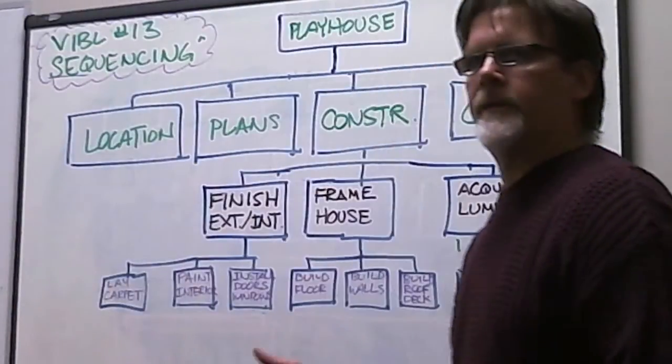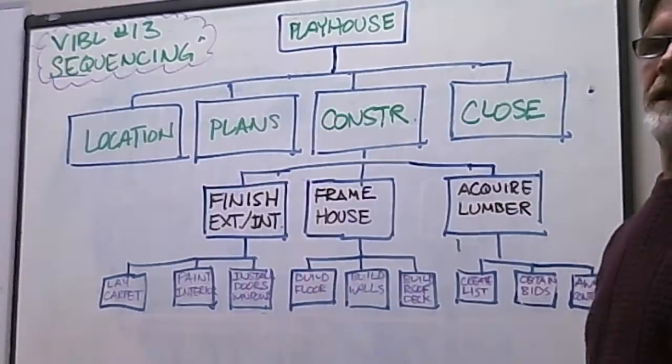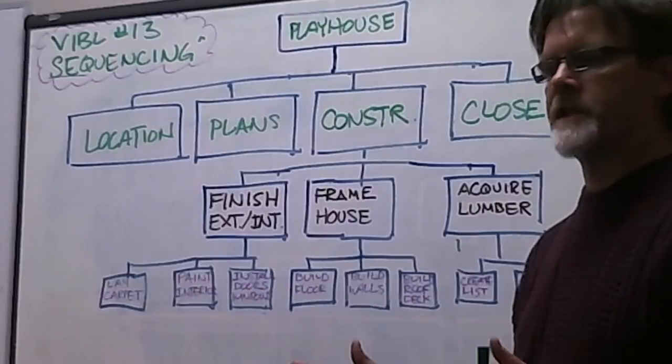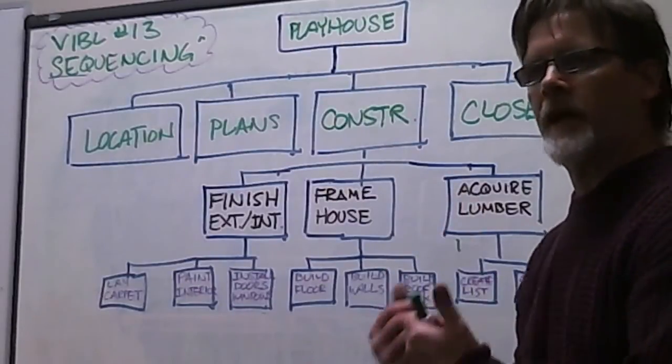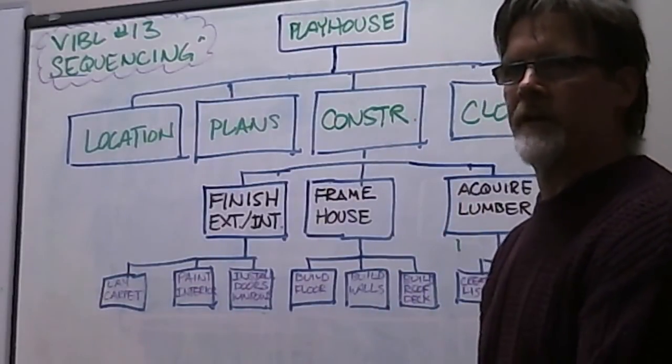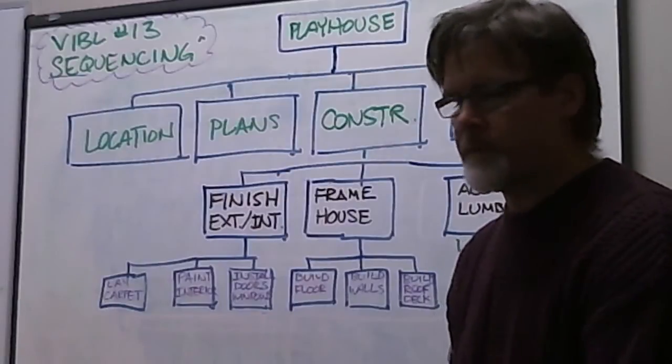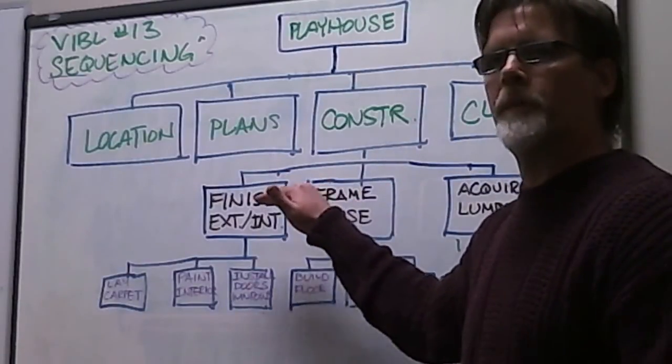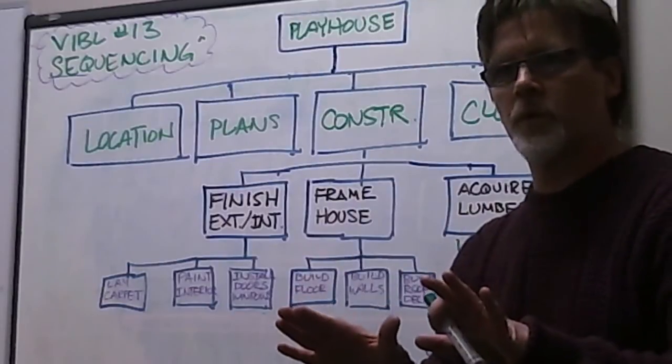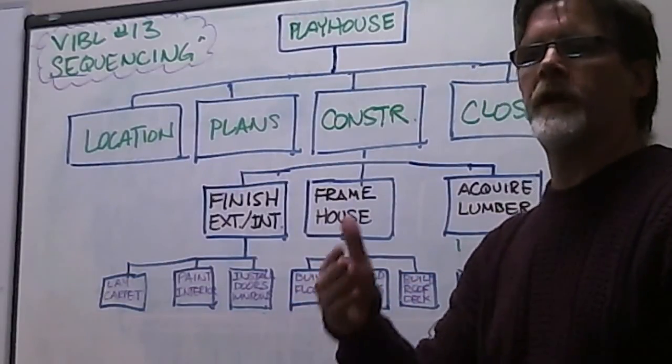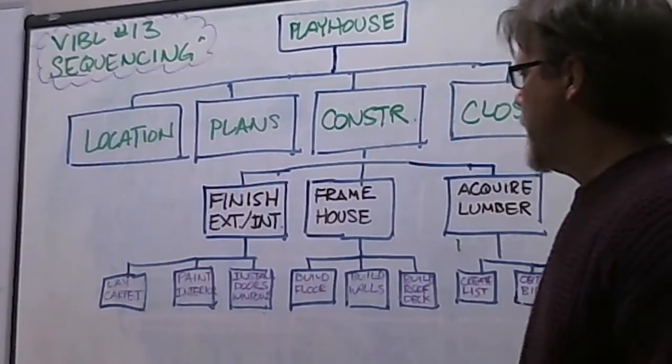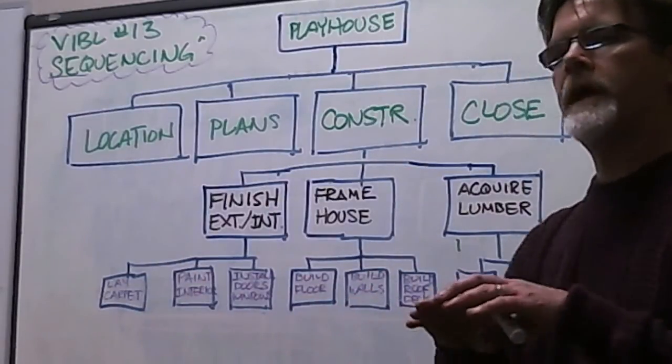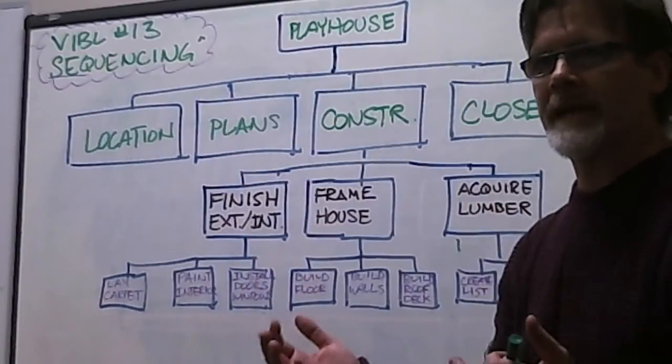As you look at the work breakdown structure of a playhouse, the two things I want you to remember is that when you decide to develop that sequence and the logic of the work and how it's to be performed, make sure that you're consistent with the tiers. So if you're going to do it from the work package level, then you stick with the work package level and make sure you develop your logical sequence that way. If you drop down and do the activity level, make sure that you develop your sequence based on the activity level.